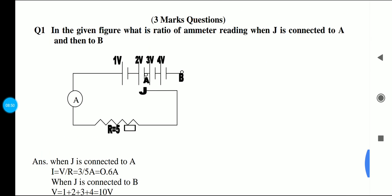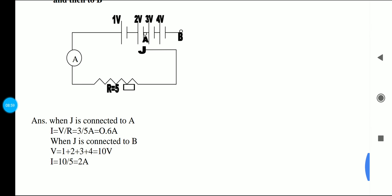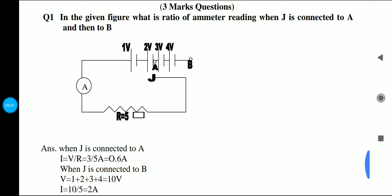After that, we have the question in three marks. This figure is given. What is the ratio of ammeter reading when J is connected to A and then to B? When J is connected to A, we have I equals V upon R. Here the voltage would be 3 and resistance will be 5. So it will be 0.6 A. When J is connected to B, the voltage is 1 plus 2 plus 3 plus 4, which is 10V. And I value 10 upon 5, that is 2A. So with this, we have completed the 3 marker HOTS questions.